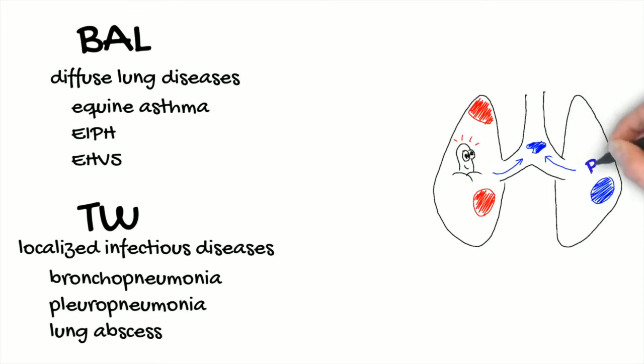In contrast, fluid collected from a BAL is only representative of the lung region distal to the bronchus where the tube or the endoscope arrives. For this reason, it is possible to obtain BAL samples with normal cytological findings in horses with pulmonary infections.